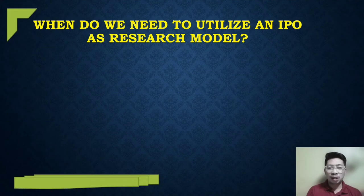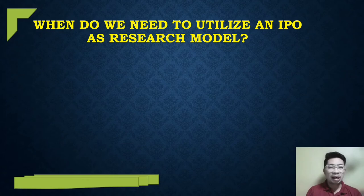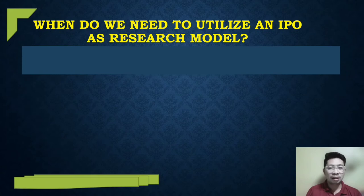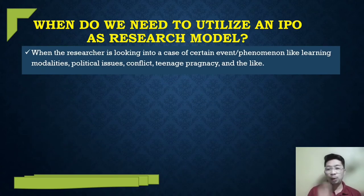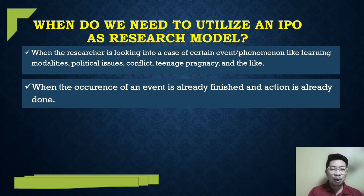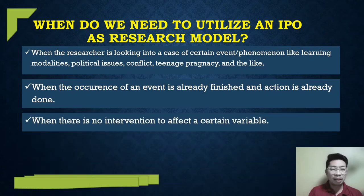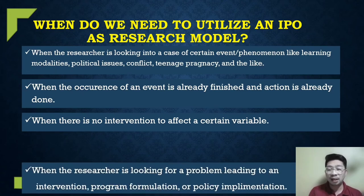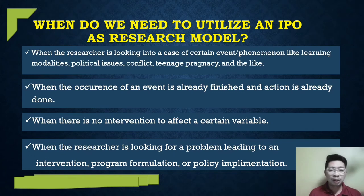Sometimes the problem for a researcher is knowing when to apply IBDV, when to utilize a concept map, and when to use the IPO model. I'll give you four conditions for when to utilize IPO as a research model. Number one, when the researcher is looking into a case of a certain event or phenomenon like learning modalities, political issues, conflict, or teenage pregnancy. Number two, when the occurrence of an event is already finished and action is already done or conducted. Number three, when there is no intervention to affect a certain variable. And number four, when the researcher is looking for a problem leading to an intervention, program formulation, or policy implementation.